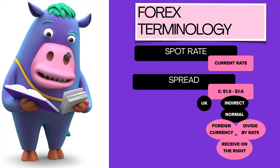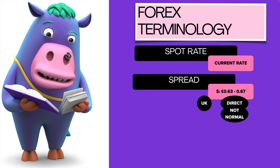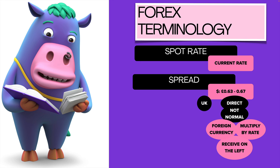But what if it's not shown normally? When the dollar is one — the foreign currency is one — and your currency is the one going around the dollar, we call this the direct method, or the not normal method, because it's not normally shown that way. Everything's the other way around. You take your foreign dollars and multiply by the rate given. Which rate do you use, 0.63 or 0.67? Normally the R's go together and you receive on the right — but this is not normal, so you receive on the left. You would times it by 0.63 to get what you want to receive.